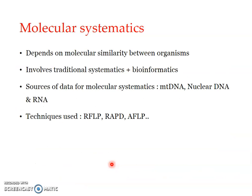Next is molecular taxonomy, which depends upon molecular similarity between organisms. The classification is based on molecular similarity — even at the genetic level or DNA sequence level. It involves traditional systematics as well as bioinformatics, and computer-aided techniques are used for molecular systematic classification. The data sources for molecular systematics include mitochondrial DNA sequences, which are used for comparing species.